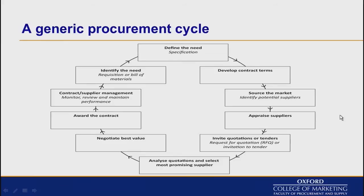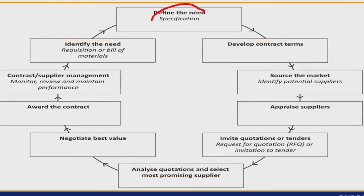Here we have it in a diagram — the generic purchasing cycle. It's generic because it fits most situations. We move from defining the need, then specifying — working out exactly what it is that we want to obtain from suppliers — then developing contract terms: how we're going to do business, what we expect the supplier to provide, and what our co-responsibilities are.